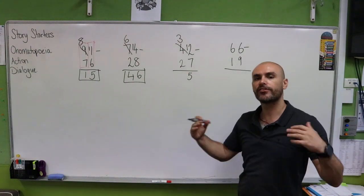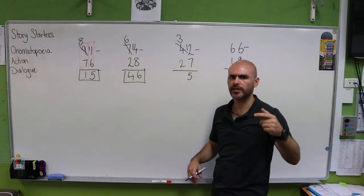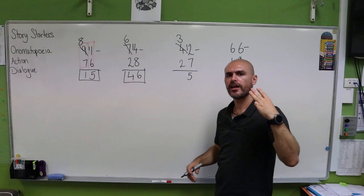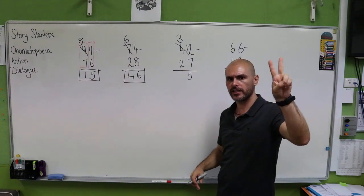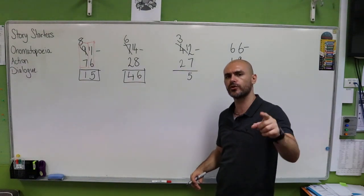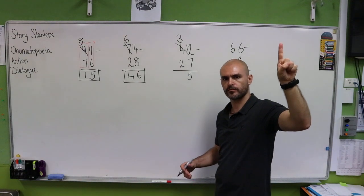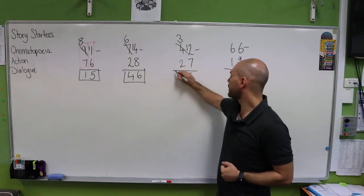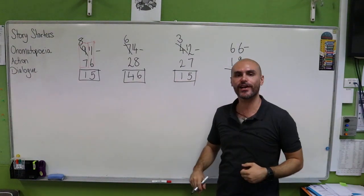Now we have three take away two. We're going to use our same skills. What's the difference between three and two? So we're going to count up two, three. And that one gives us our answer of 15.